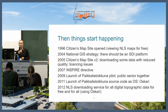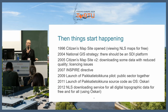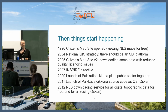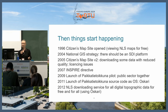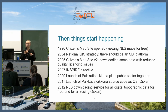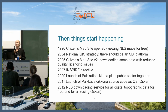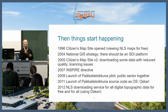In 2009 we launched the first version of Paikkatietoikkuna. There was a pilot before that where different organizations had become excited about it — certain individuals in these organizations getting excited about the idea and starting to pilot different kinds of APIs to be able to share data according to the Inspire Directive. And in 2011 we would launch the Paikkatietoikkuna source code as open source software under the name Oskari. Then in 2012, National Land Survey would finally open all of their data for free — do whatever you want with it.